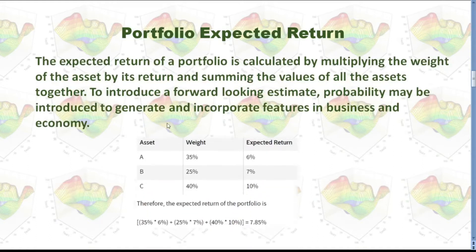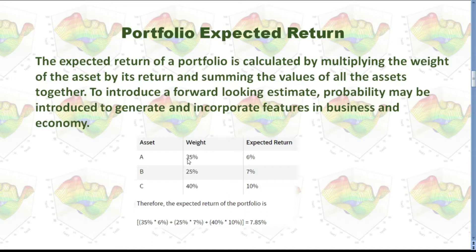How do we calculate portfolio expected return? The expected return of a portfolio is calculated by multiplying the weight of each asset by its return, then summing the values of all assets together. For example, if I have three assets with weights of 35%, 25%, and 40%, and expected returns of 6%, 7%, and 10% respectively, we multiply weight by expected return for each asset and sum those up. In this example the result is 7.85%.